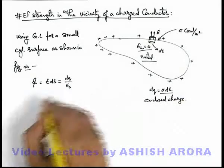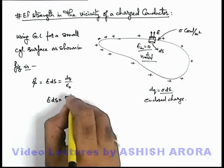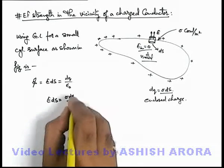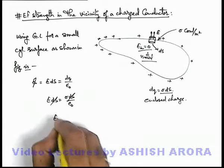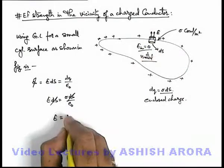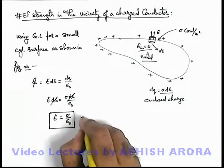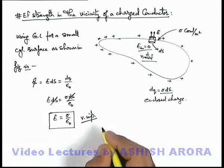So if we substitute the value here you can see this E d-s can be written as sigma d-s by epsilon not, and here d-s cancelled out and the value of net electric field just outside the metal surface can be given by sigma by epsilon not. And this is a very important result you should always keep in mind.